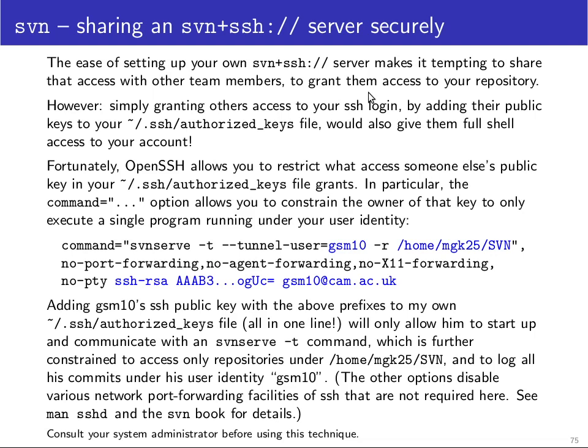Fortunately, OpenSSH allows you to restrict what access someone else's public key has. In the authorized_keys file syntax, you can prefix a key with a command attribute, and then only that command will be executed instead of the shell. This way you can allow someone access to your account but not grant them shell access — they can only talk with the SVN serve process.